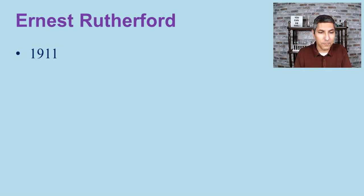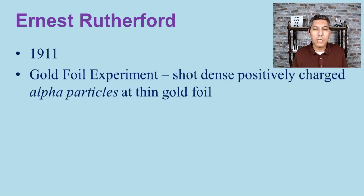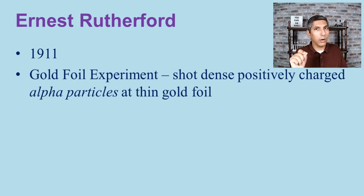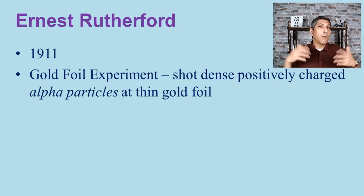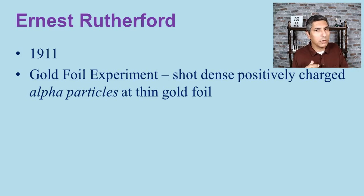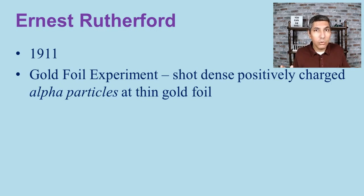Around 1911, Ernest Rutherford performed what we now call the gold foil experiment. He shot very dense, positively charged alpha particles at extremely thin gold foil. His expectation, based on the plum pudding model, was that all the alpha particles should pass straight through. Indeed, most of the time they did go straight through — however, every so often, perhaps once every few thousand, an alpha particle was actually deflected by the gold foil.